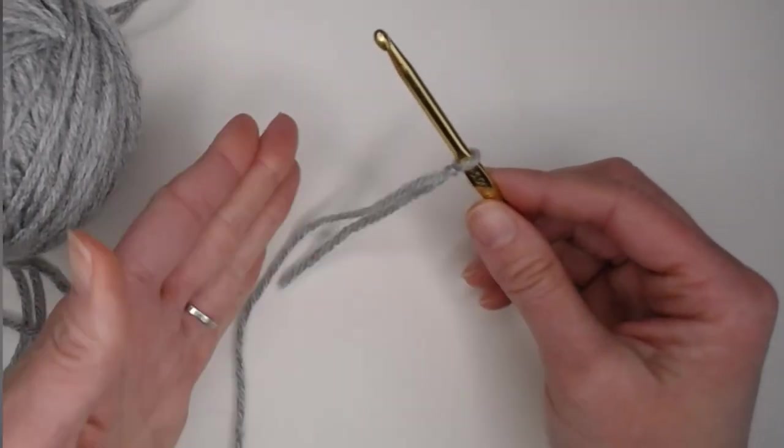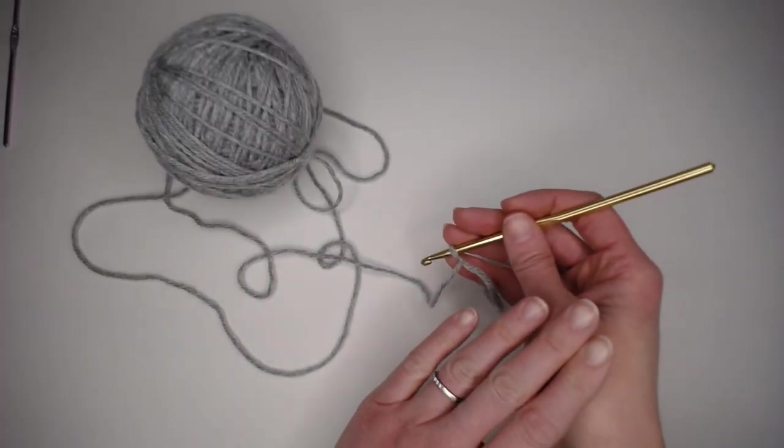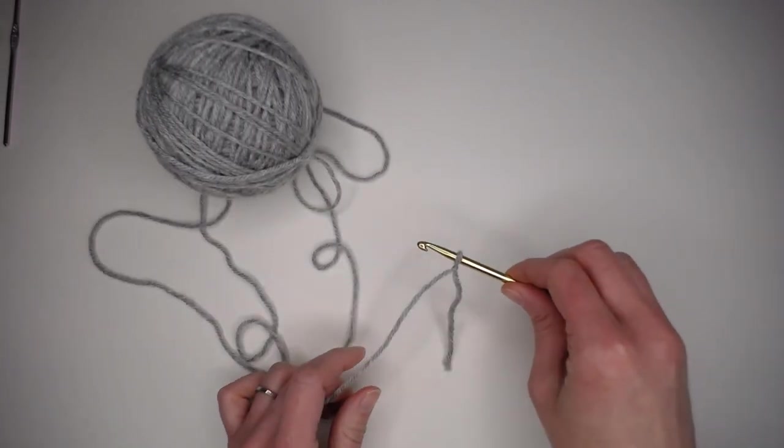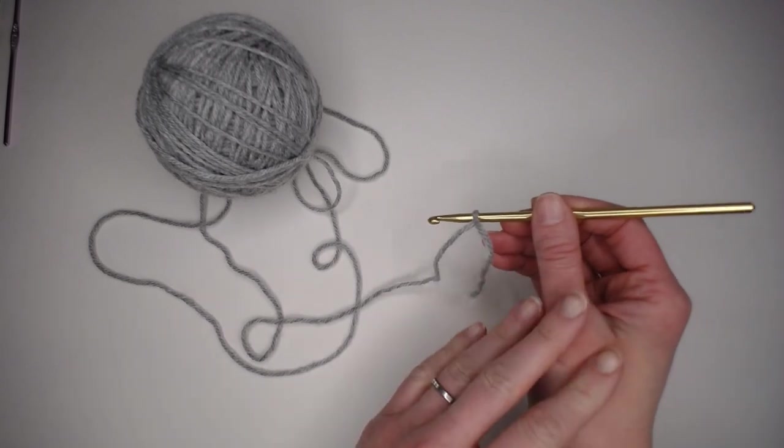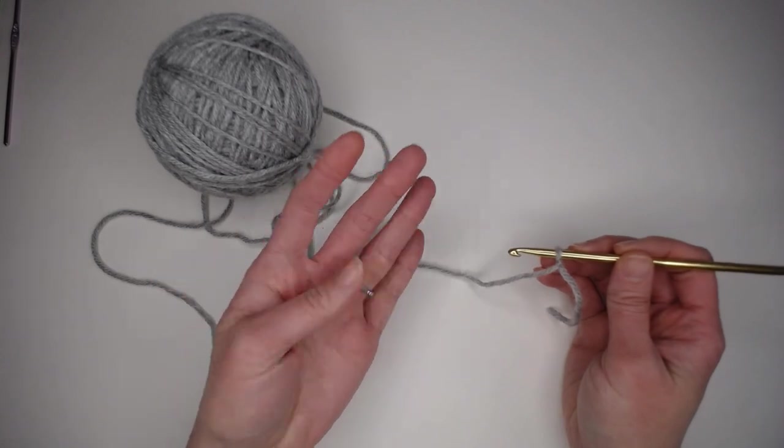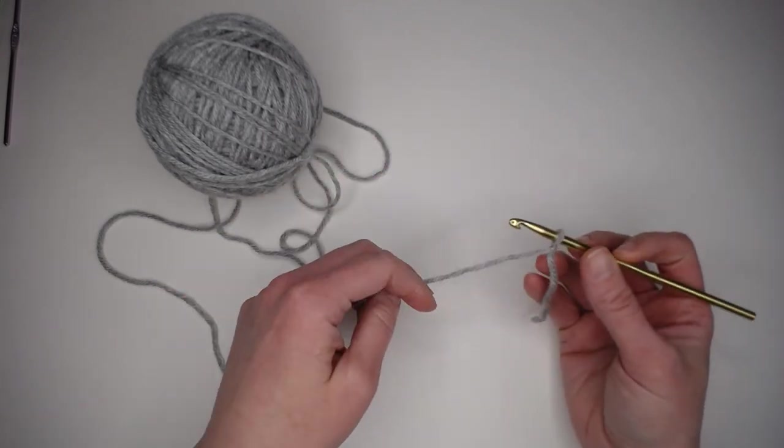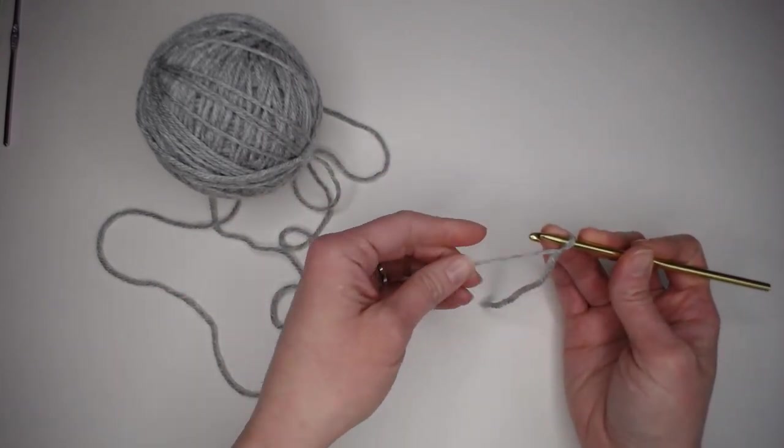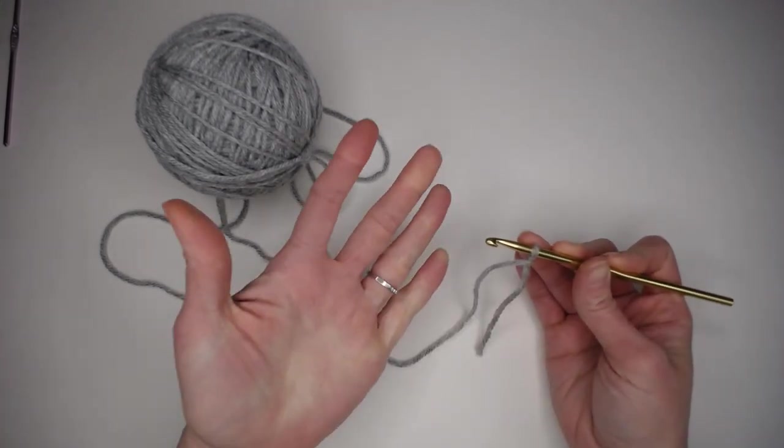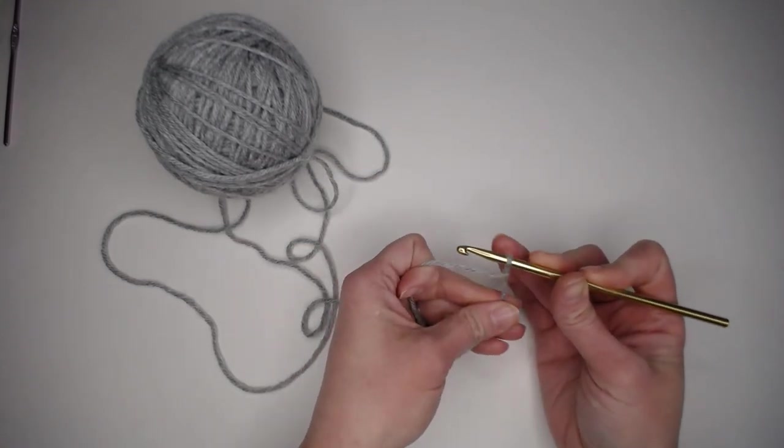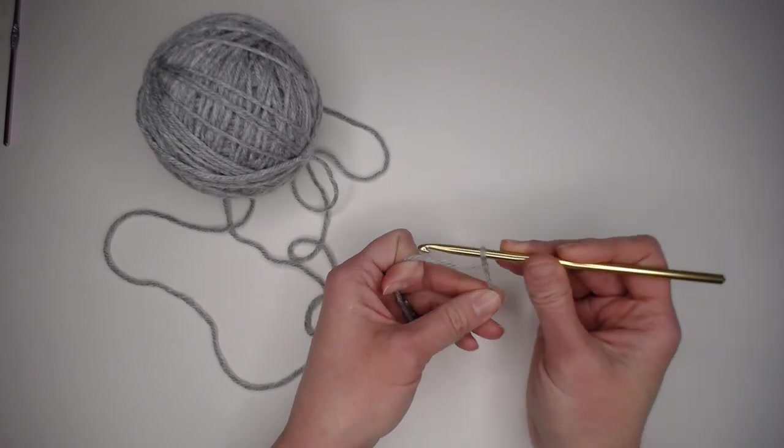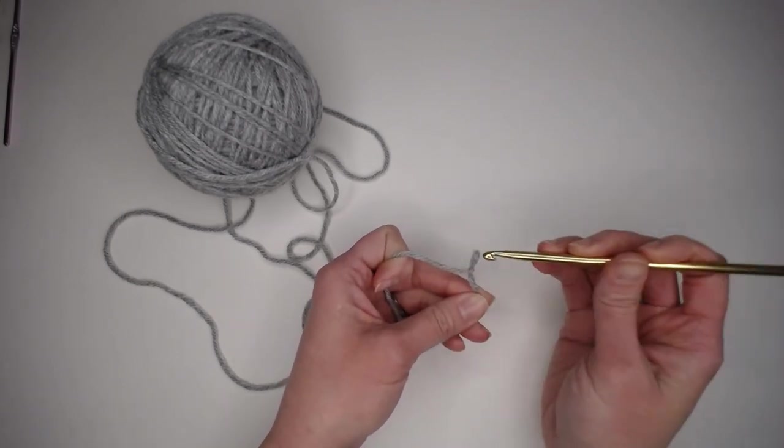Now we are ready to actually start chaining. With your dominant hand, decide, are you going to use the pencil hold or the knife hold? You can play with this hold back and forth deciding what is more comfortable for you. Your other hand, non-dominant hand, is going to hold the yarn for tension. You want to make sure that this yarn is tight and that this yarn is tight. This hand will make sure that the yarn is under control and this hand will make sure that the crochet hook is doing what the crochet hook needs to do.